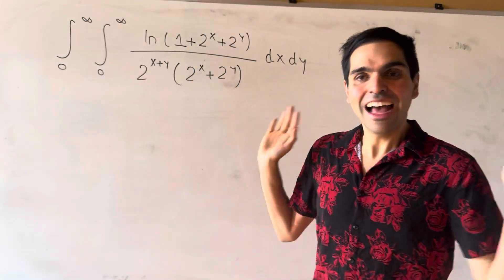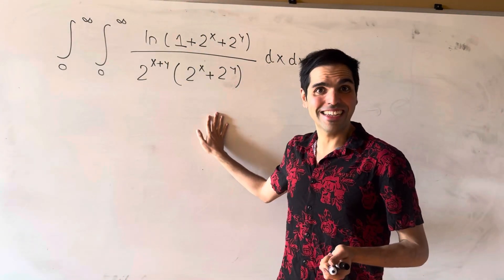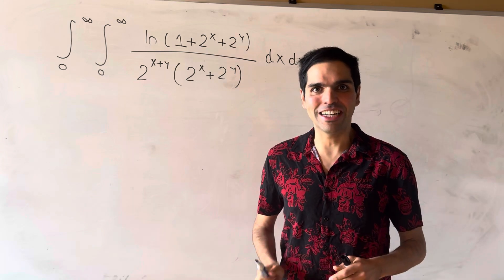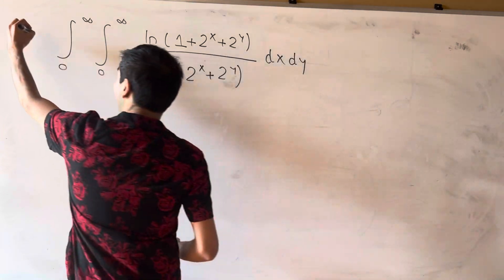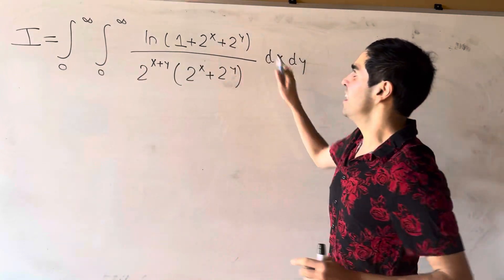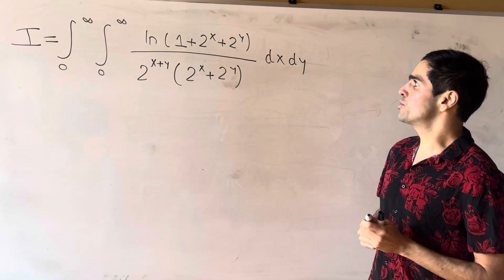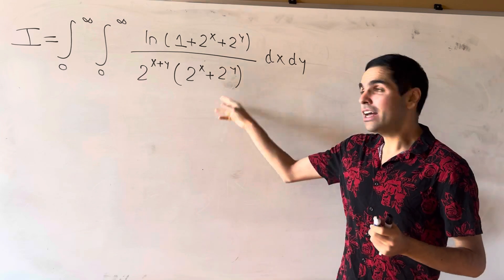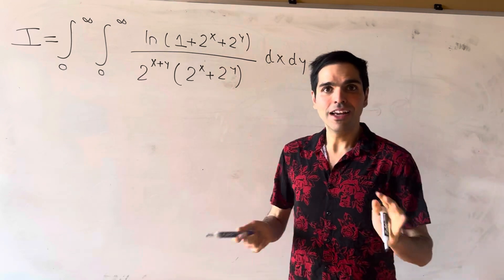Thanks for watching. Here's a pretty insane double integral that will turn out to be very neat. Let I be that double integral of ln of (1 + 2^x + 2^y) over (2^(x+y) times (2^x + 2^y)).